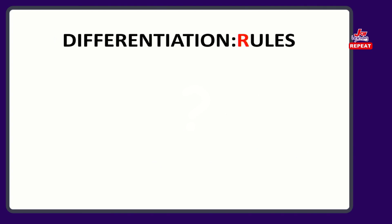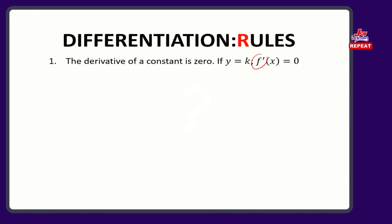So what are the general rules of differentiation? Number one: the derivative of a constant is 0, because there is no change. I have written a notation f prime of x — it is another way of saying dy/dx. The derivative of a constant is 0.